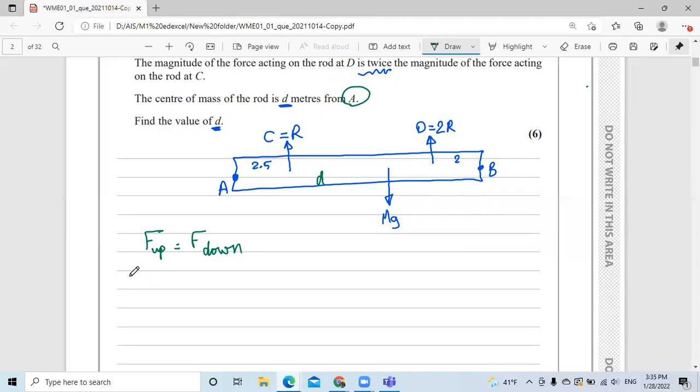So first step, I'm saying forces up equal forces down. From here, I'll say that R, this force, and 2R, the other force that acts on C and on D, equal the forces down, which is the weight of the plank or the rod, which is Mg. From this, we find that 3R equals Mg. That means M equals 3R over G. I make M as a subject of the formula because I want to use it later on.